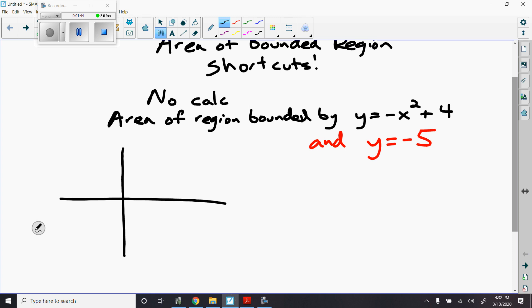So the first graph, y equals negative x squared plus 4. We think about our parent function here as a parabola, but we know it's shifted up 4 and it's also going to open down because it's negative x squared. It's going to open down, have a y intercept of 4. That's the first function. Y equals negative 5. When it's y equals a constant, that's a horizontal line. x equals a constant is a vertical line. So we've got a line that looks something like this, and I'm looking for the area of that bounded region.